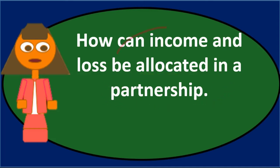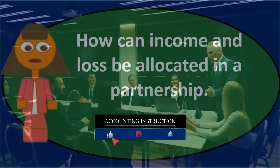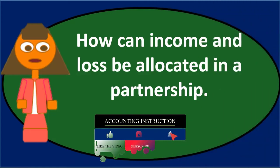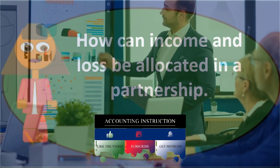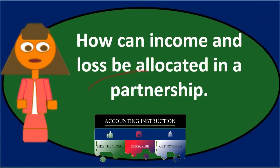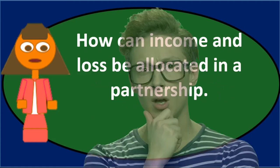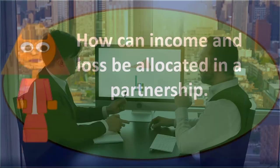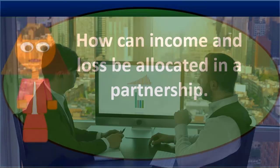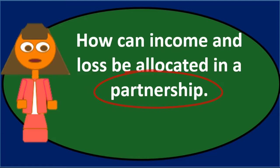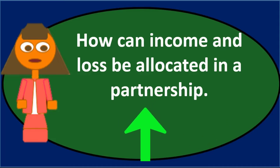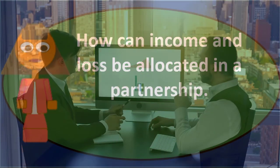The first allocation method is simply an even split. However many partners you have — two, three, five, a hundred — you can evenly split the income: 50/50 for two partners, one-third each for three, one-fourth each for four. New individuals starting a partnership often think this is just the way it has to be, that an even split is the only fair approach — but that's often not the case.